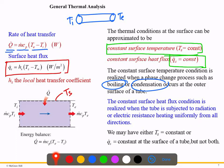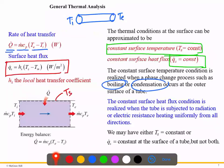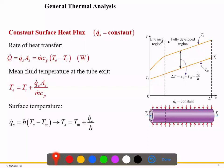Using the constant surface heat flux condition, you may be asked to calculate the exit temperature of the tube. For constant heat flux, the temperature variation shows the inlet at one end and the outlet at the other. The mean temperature Tm varies linearly from inlet to outlet.